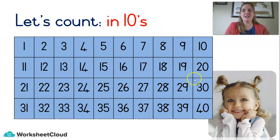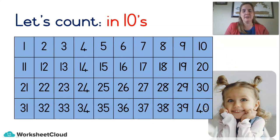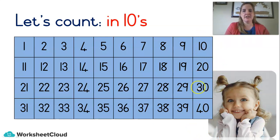Counting in tens is so nice — you just go straight down the side: 10, 20, 30, 40. I wish we could go on to 50, 60 and all the way to 100. Let's just do 10 to 40 again: 10, 20, 30, 40. Very good — that's counting in tens. Our brains are all warmed up.